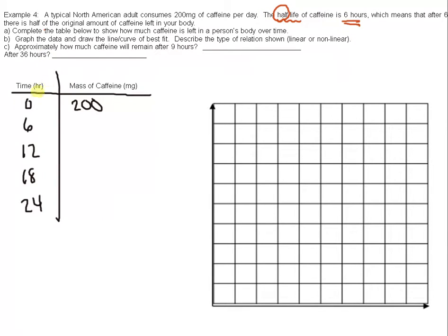So let's complete the table of values. We have time, we have mass of caffeine. Because the half-life of caffeine is six hours, it makes sense to go up by six hours for time, every six hours. So 6, 12, 18, 24.